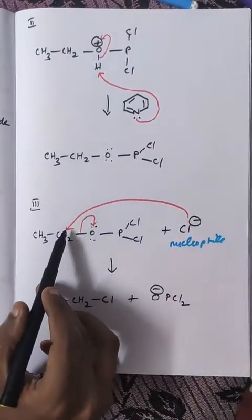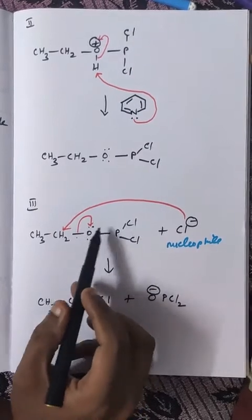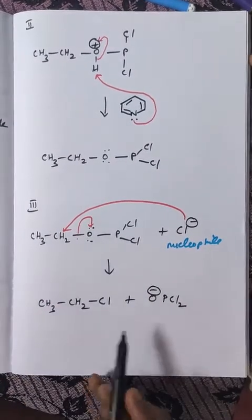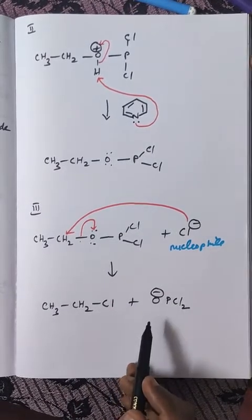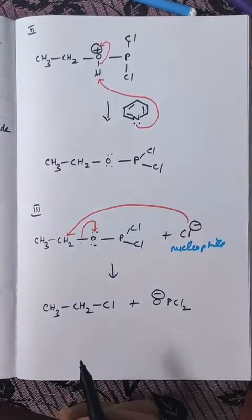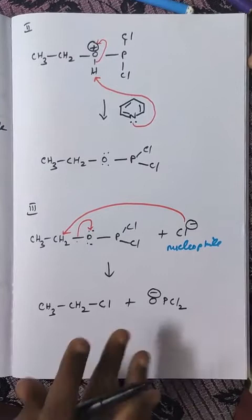The nucleophile is adding on one side and O-PCl2 with minus charge is the leaving group. The addition of nucleophilic chloride ion and leaving group takes place simultaneously. So this is an example for SN2 reaction, SN2 mechanism.